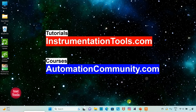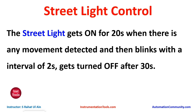Hello friends, welcome to Automation Community. Today in this video we are going to discuss an example on street light control. The street light gets on for 20 seconds when there is any movement detected, and then blinks with an interval of 2 seconds, then gets turned off after 30 seconds. When a movement is detected the street light turns on for 20 seconds.